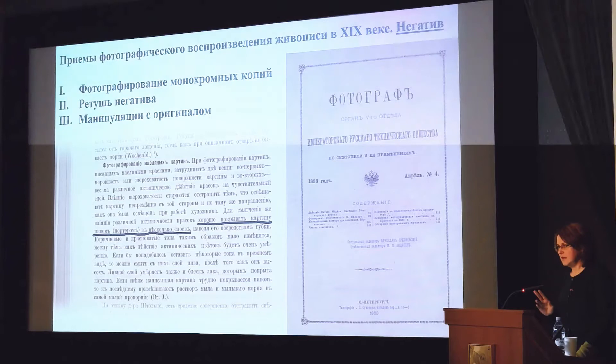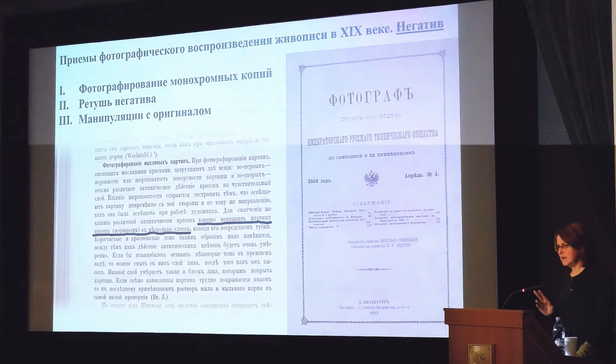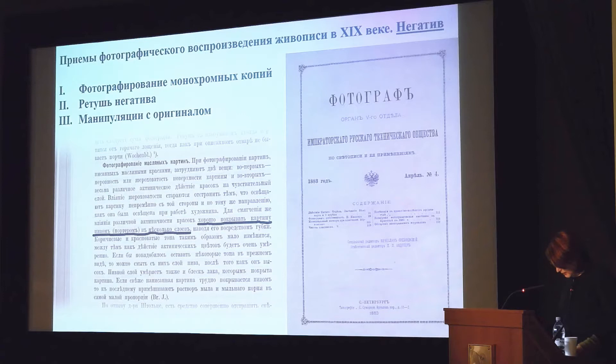German magazines advised using kerosene, alcohol, and even garlic juice on paintings before photographing. A respected Austrian chemist, Josef Maria Eder, in the late 19th century suggested recipes that became popular to 'revive' oil paintings — a mixture of glycerine, olive oil, sugar, and egg white.